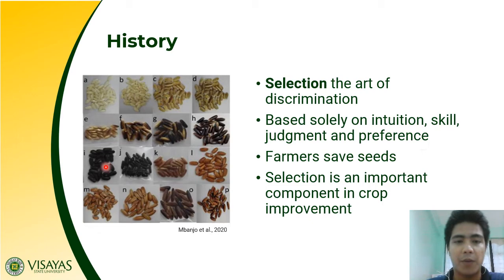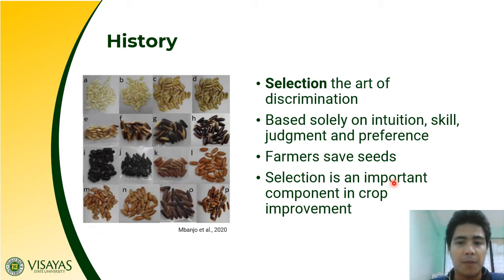For example, we have rice genotypes and if farmers wanted to select highly pigmented rice, they will choose those with darker colors. Selection is an important component in crop improvement. In fact, selection accounts for about 90% of all plant breeding programs, and only a small portion is devoted to other activities like hybridization.